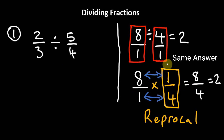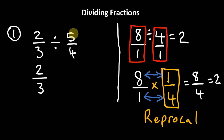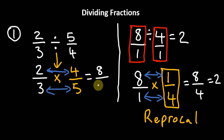The same thing applies when we are dealing with regular fractions — those whole numbers were just converted to fractions so you could relate to the concept easily. Now, what we're going to do is keep the first fraction, two thirds, and remember: dividing by five quarters is the same thing as multiplying by its reciprocal. So we change the division sign to multiplication and flip five divided by four to become four divided by five.